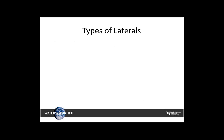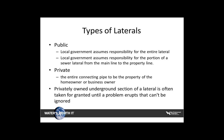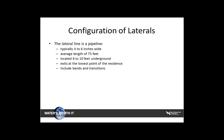There are two types of laterals encountered in the field: public and private. A public lateral is when the local government body assumes responsibility for either the entire lateral or a section extending from the property line to the main line. A private lateral is where the entire lateral is a concern of the property or business owner. Privately owned underground sections of laterals are often taken for granted until a massive sewage backup occurs and cannot be ignored.